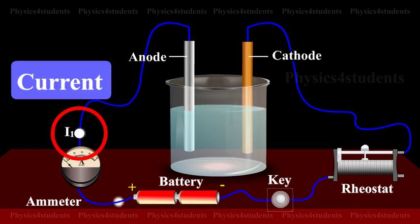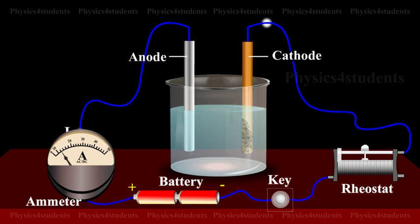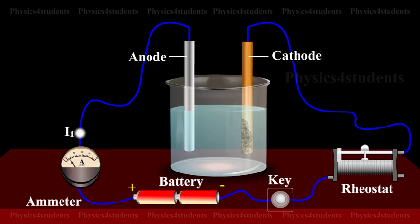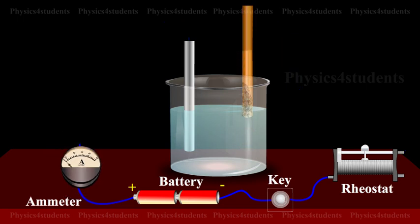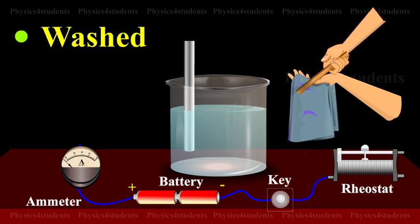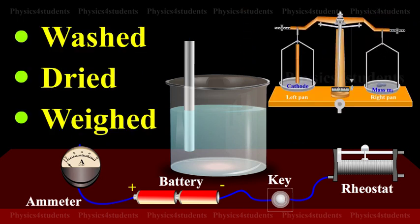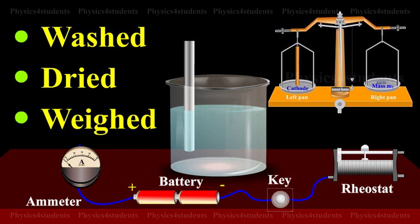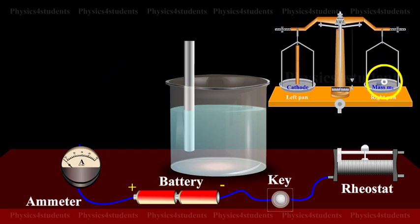A current I1 is passed for a time T. The current is measured by the ammeter. The cathode is taken out, washed, dried and weighed again. Hence, the mass M1 of the substance deposited is obtained.